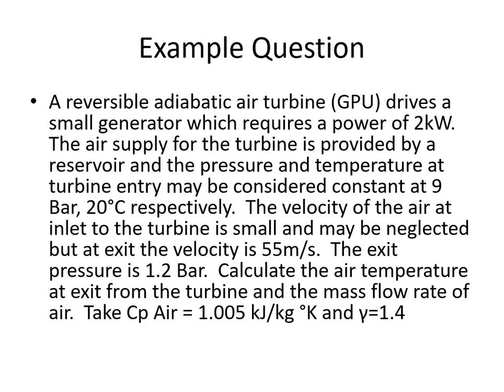The velocity of the air at inlet to the turbine is small and may be neglected, but at exit the velocity is 55 meters per second. The exit pressure is 1.2 bar and we are asked to calculate the air temperature at exit from the turbine and the mass flow rate of air. We are going to take the specific heat capacity at constant pressure of air to be 1.005 kilojoules per kilogram Kelvin and the ratio of specific heats to 1.4.